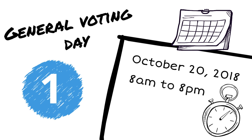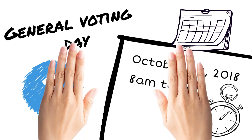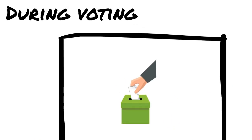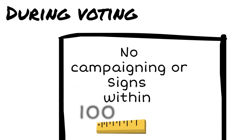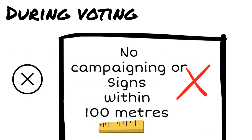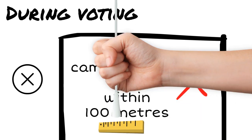Your local government will provide you with information about the location of voting places. Candidates may only be present at a voting place to cast their ballot, but must not campaign or place signs within 100 metres of a voting place during special, advance, or general voting.